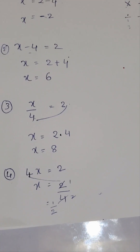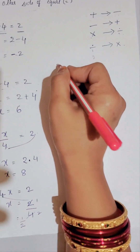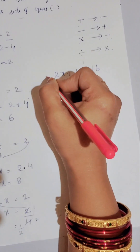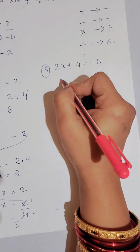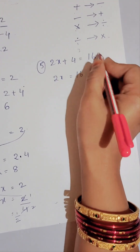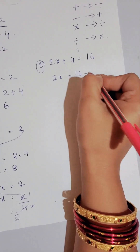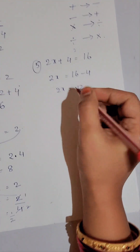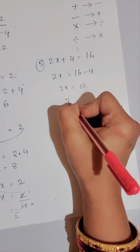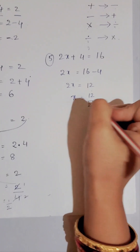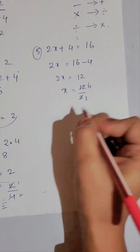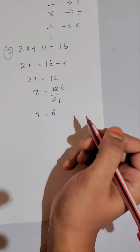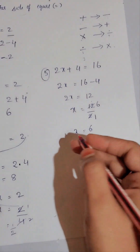Now another example: 2x + 4 = 16. First we move the 4 to the right side — it becomes minus, so 2x = 16 - 4 = 12. Then we move the 2 to the right side — multiplication becomes division — so x = 12 ÷ 2 = 6. The x value is 6.